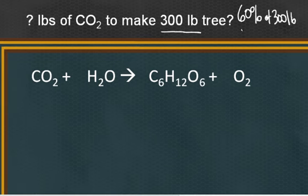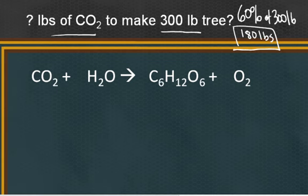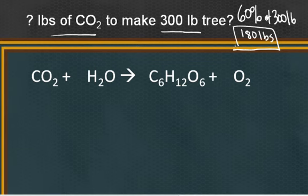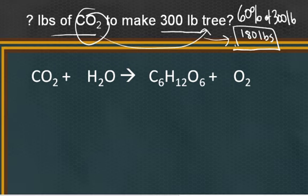So really, 180 pounds of the tree is made of cellulose. The question should really be: how many pounds of carbon dioxide does it take to make 180 pounds of cellulose? In order to answer a quantitative question like this about a chemical change — specifically the change from carbon dioxide to cellulose in the tree — we're going to need to use a chemical reaction. The chemical reaction we'll use is the famous photosynthesis reaction.